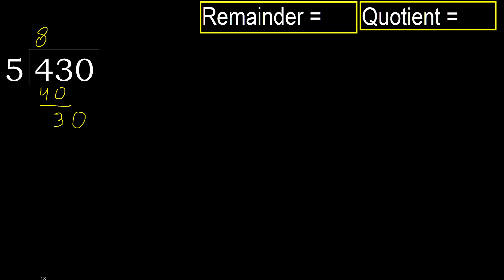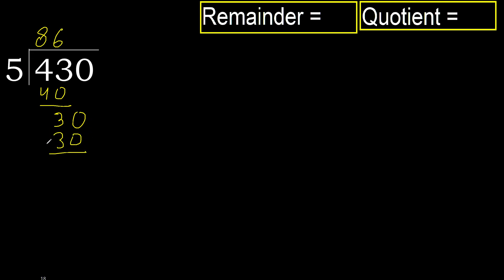Next. 30. 5 multiplied by 6 is 30. 30 is not greater, ok. 30 minus 30 equals 0. Next. That is not a number, therefore finish.